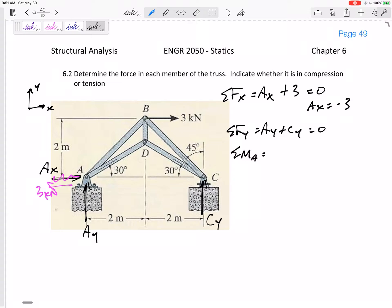I could sum the forces in the Y direction: AY plus CY equals 0. And then maybe sum the moments about any point. I'm going to do it about point A. Summing the moments about point A, I've got 3 acting 2 away. A is my pivot point. I've got this 3 kilonewtons force pushing up that way. Its moment arm would be 2. That would create a clockwise, so a negative moment.